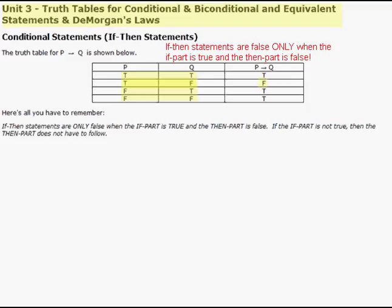Think of the if-then statement as a scientific theory: if something happens, then something else happens. The only way we can show that theory is false is if the if part is satisfied — the hypothesis has happened — but the then part doesn't happen. When that occurs, we say it's false. If the if part is not satisfied, we can't disprove that theory.